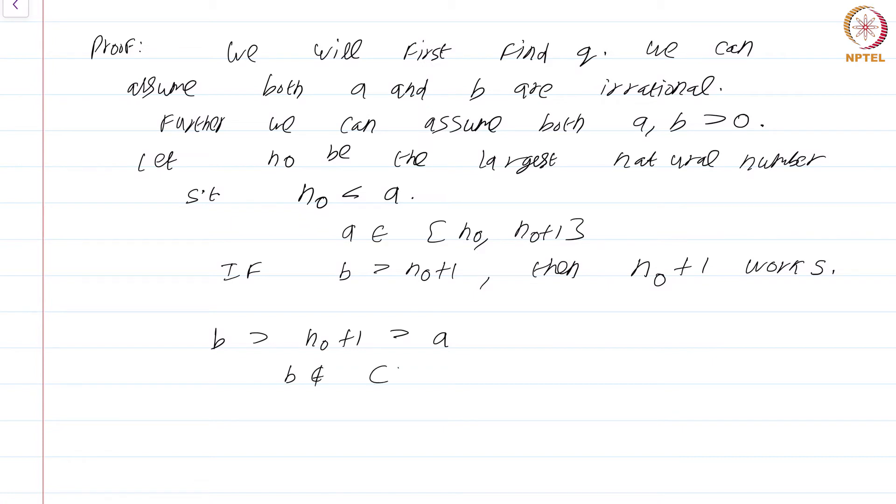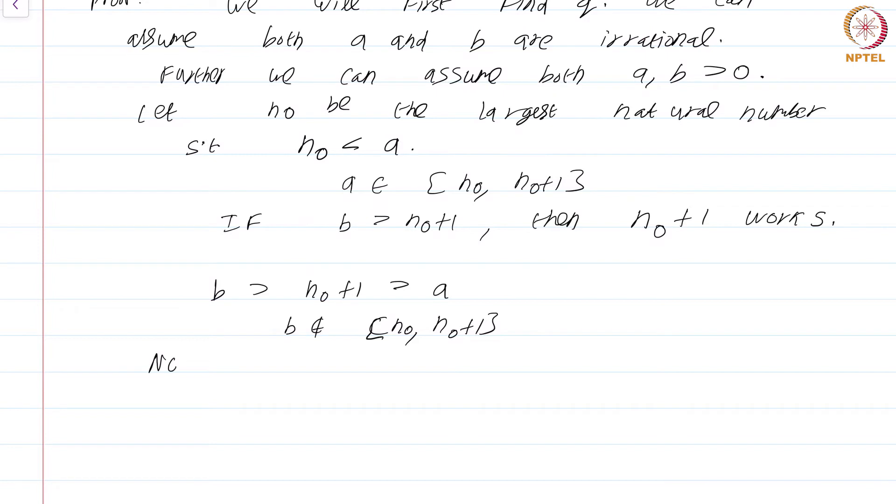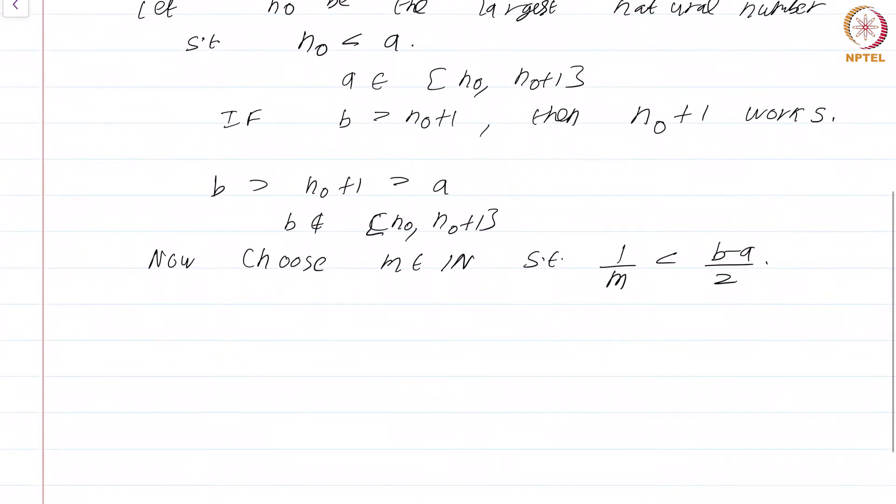We can assume that b is in [n_0, n_0+1]. Now, choose m in the natural numbers such that 1/m < (b-a)/2. And let k be the largest non-negative integer